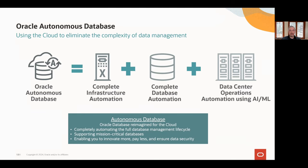Traditionally, each database deployment was more or less unique — you needed to build, secure, repair, patch, and tune each database, which was labor-intensive and generally not scalable. Autonomous Database reimagines Oracle Database for the cloud with automation of infrastructure, database, and data center operations. It takes care of database administration, so you don't have to spend time and resources tuning your database, applying patches, or updating software.